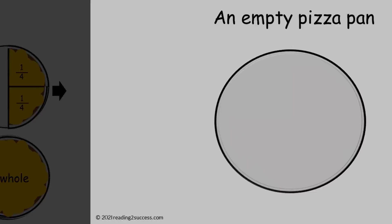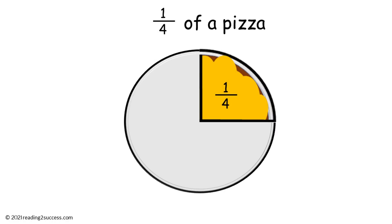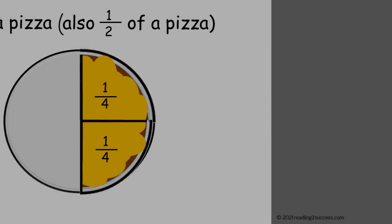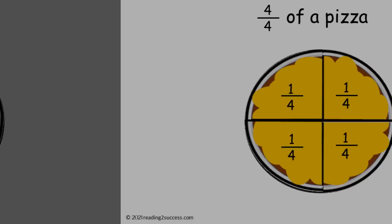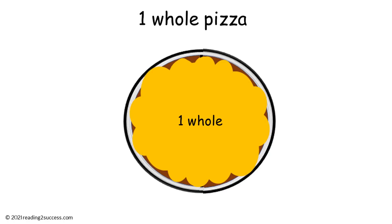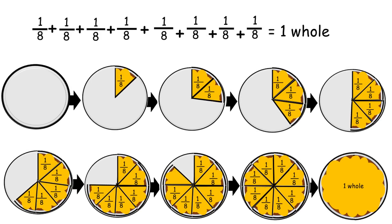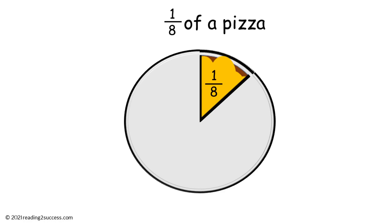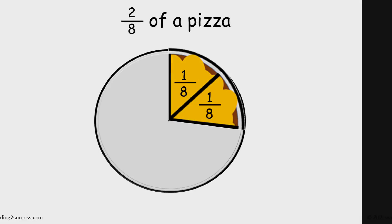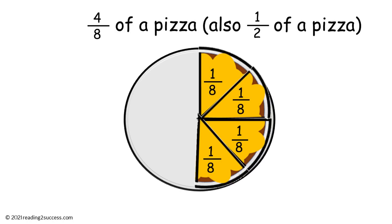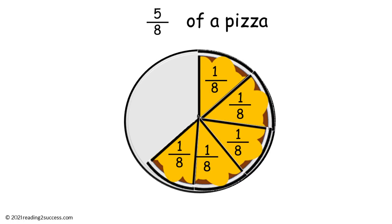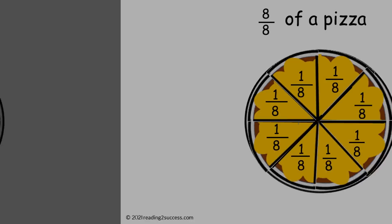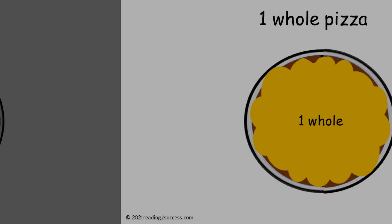Now we are looking at fourths: an empty pizza pan, one fourth, two fourths (also one half of a pizza), three fourths, four fourths — equals one whole pizza. And now eighths: an empty pizza pan, one eighth, two eighths, three eighths, four eighths (also one half), five eighths, six eighths, seven eighths, eight eighths — equals one whole pizza.